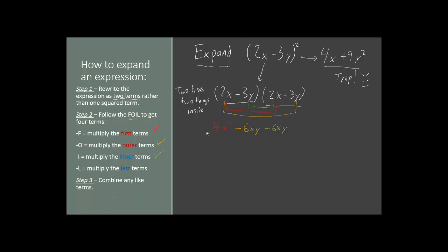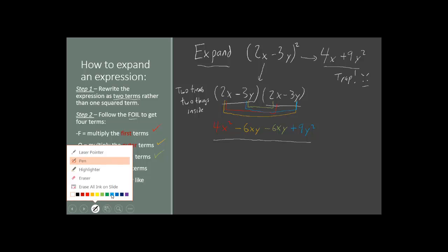For our final step of FOIL, we multiply the last terms together: negative 3y times negative 3y. Numbers first, then letters — negative 3 times negative 3 gives us positive 9, and y times y gives us y squared. And so we have 4 terms, not just 2. That takes care of the last terms.